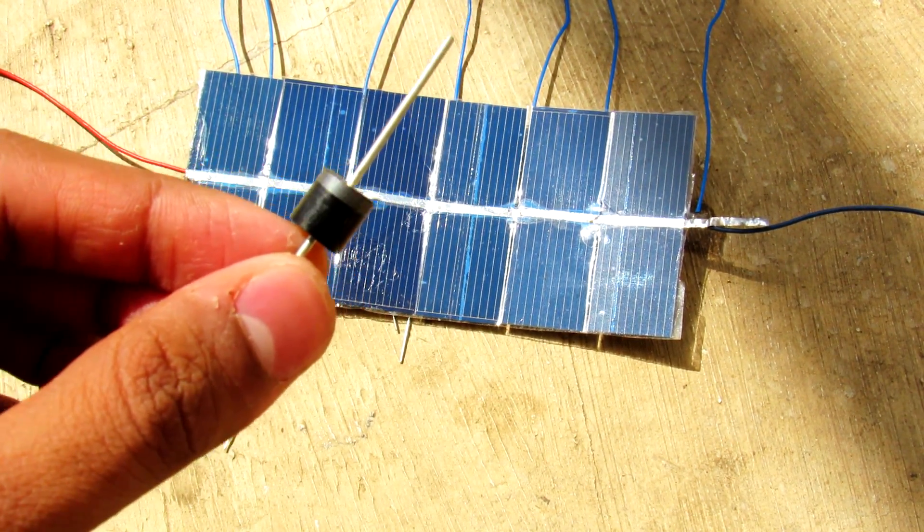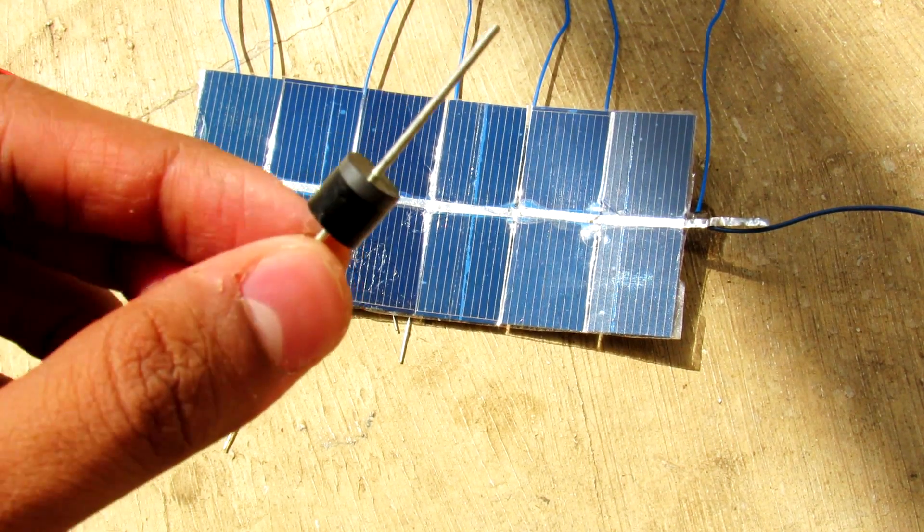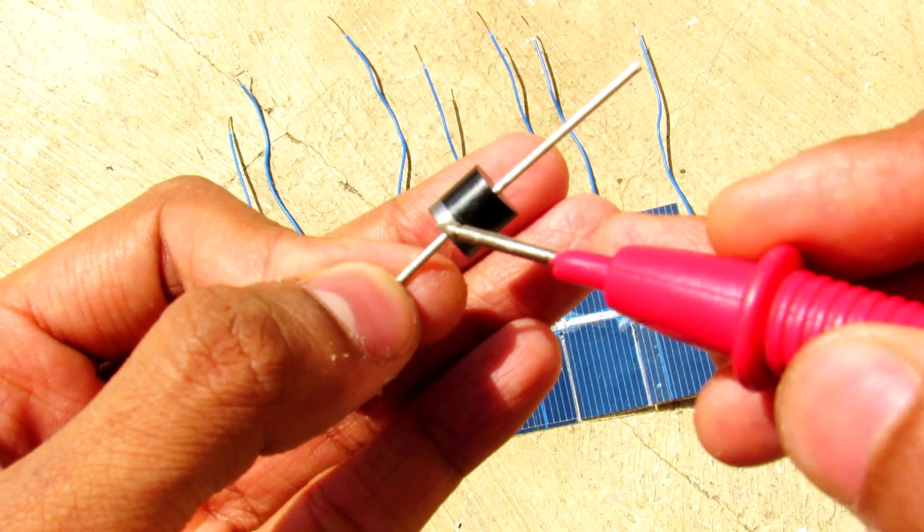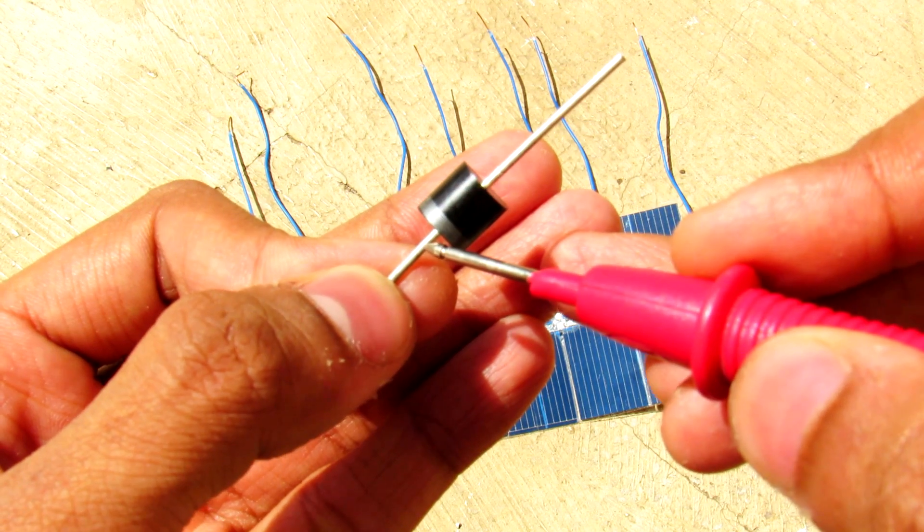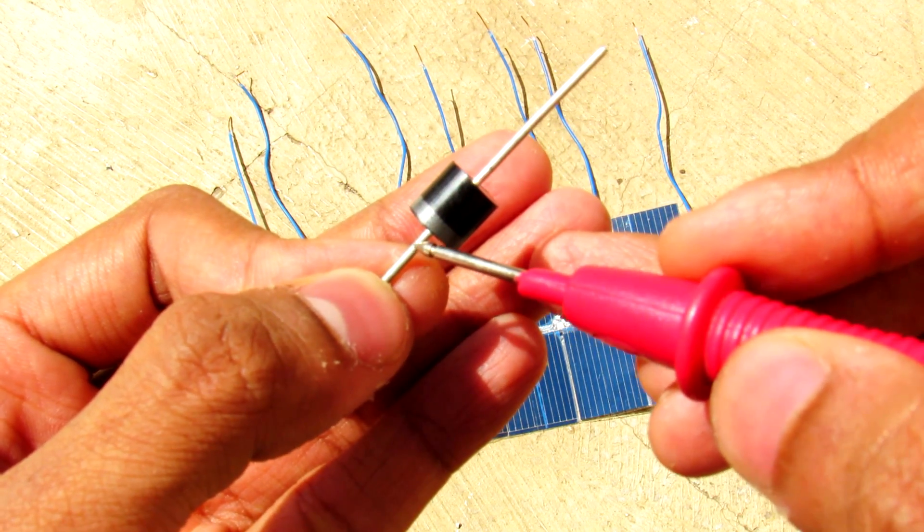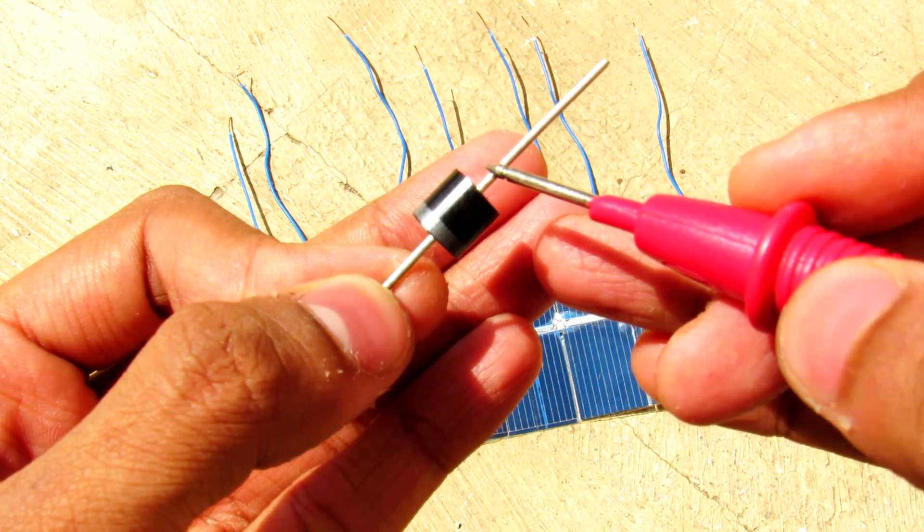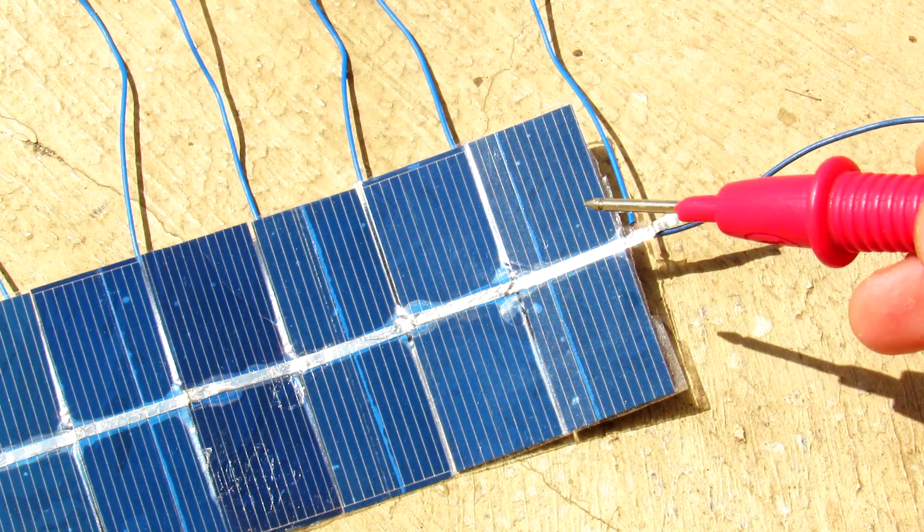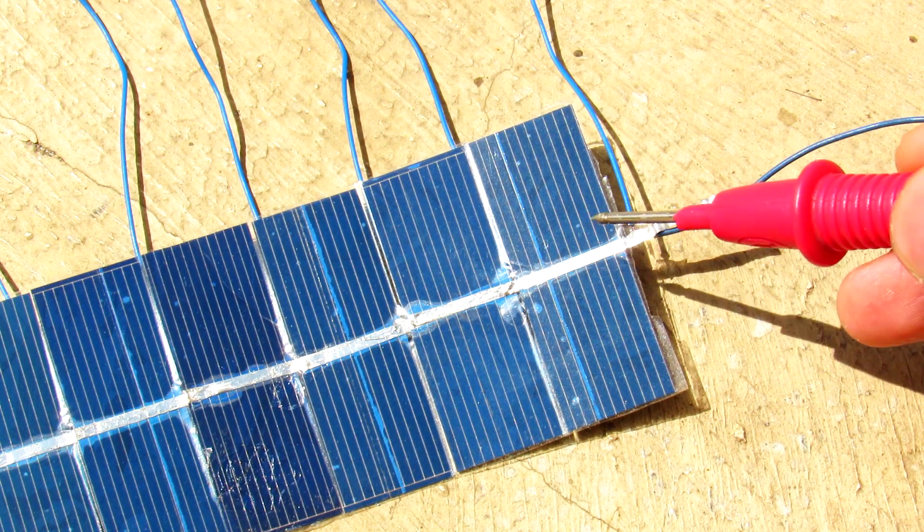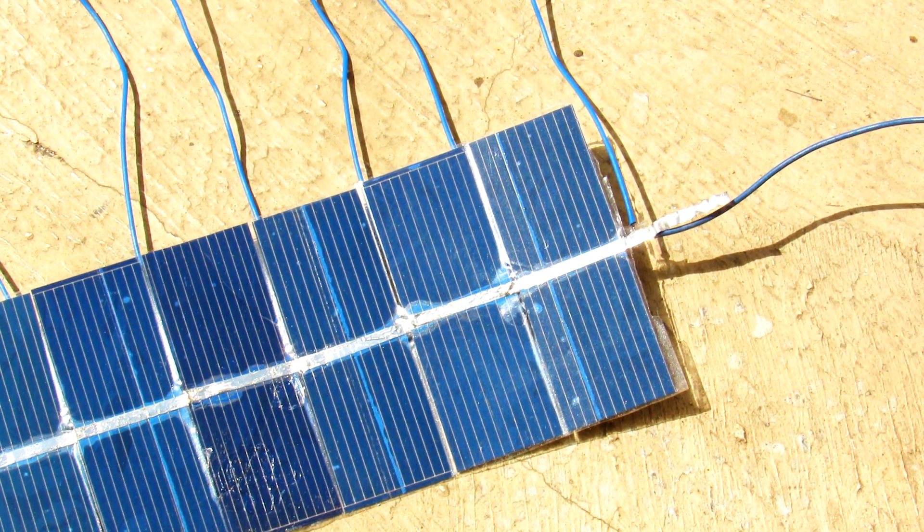So on the diode, this side covered with the silver strip is negative and this is the positive side. And for the solar panel, this top surface is negative and the bottom surface is positive.